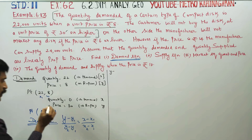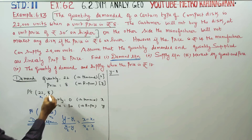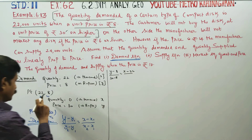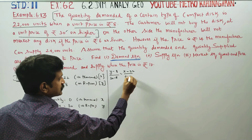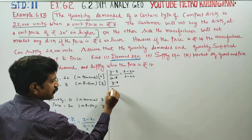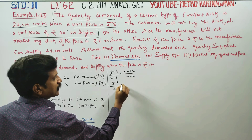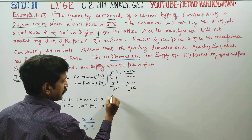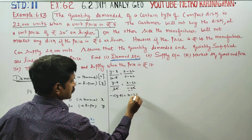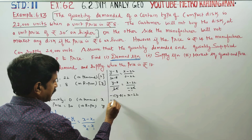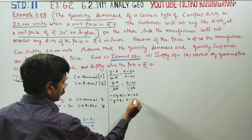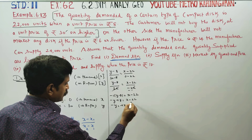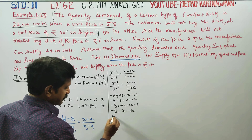Substituting: y - 8 divided by 30 - 8, equals x - 22 divided by 0 - 22. Simplifying: y - 8 over 22 equals x - 22 over -22. The 22s cancel, giving -1 times (y - 8) = x - 22. Expanding: -y + 8 = x - 22.